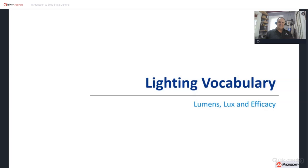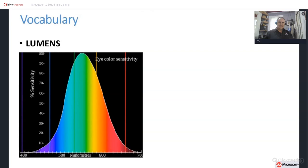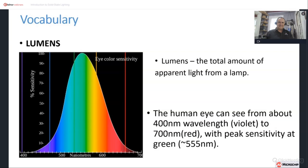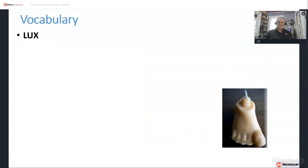Let's begin our look at the vocabulary of lighting. The first word is lumens — the total amount of apparent light from a lamp. Total meaning added up in all directions, and apparent meaning it is weighted by how the human eye perceives various colors. The human eye can see from about 400 nanometers in the violet range to about 700 nanometers on the red side, with peak sensitivity at 555 nanometers in the green. It is not a uniform weighting of the light.